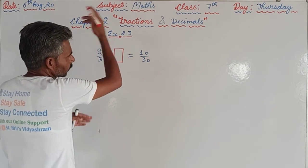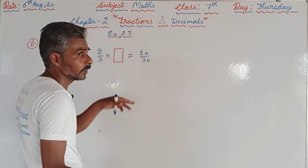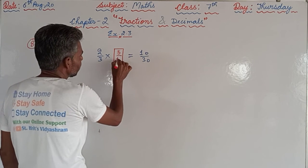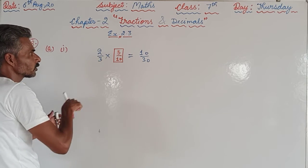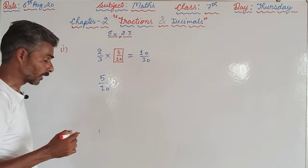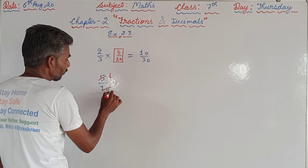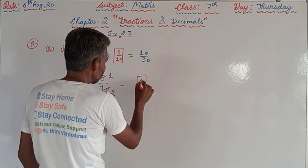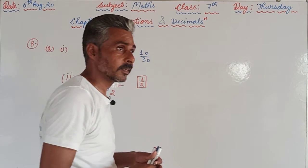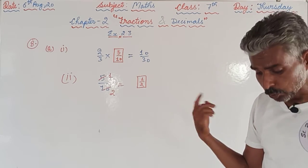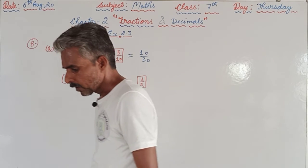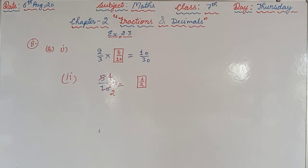From two we are making ten, and from three we are making thirty. By which number are we multiplying? Two times five is ten, and three times ten is thirty. So the number in the box is five upon ten. Five upon ten can be reduced because five and ten are both in the table of five. So in the second box it becomes one upon two — that is the answer to both parts.